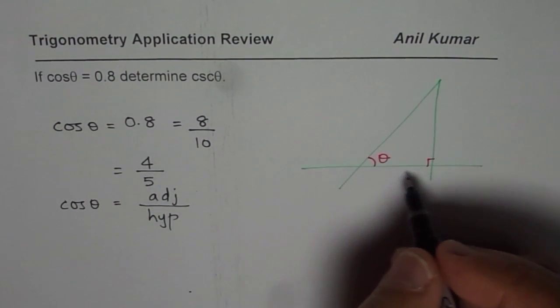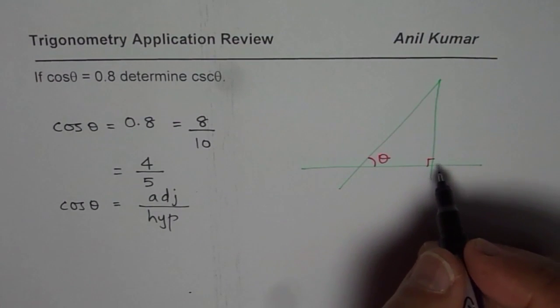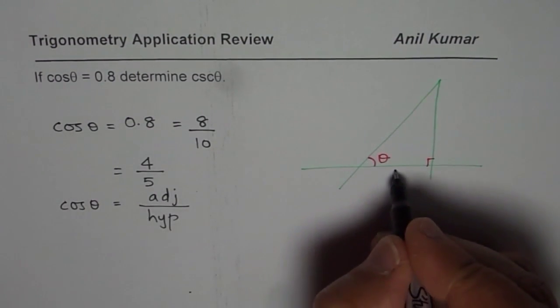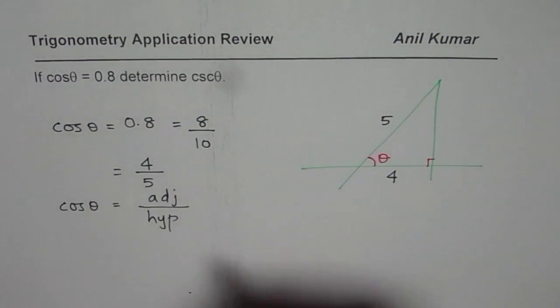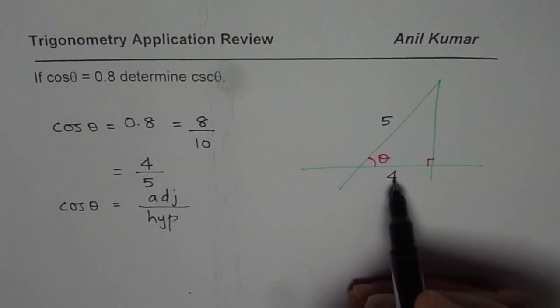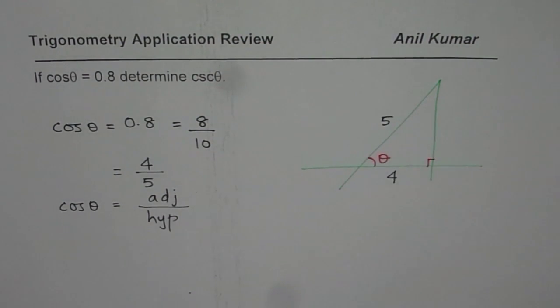So that means if I have a right triangle, in that case adjacent side is 4 and hypotenuse is 5. Since it is a ratio, it could be any triangle, but the ratio of adjacent side to hypotenuse is given to you. So you can take one which is the most simplified one.